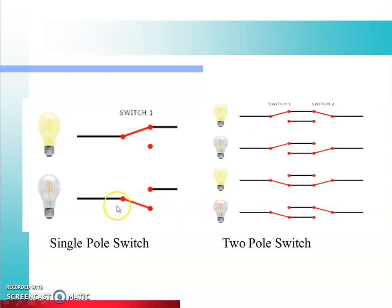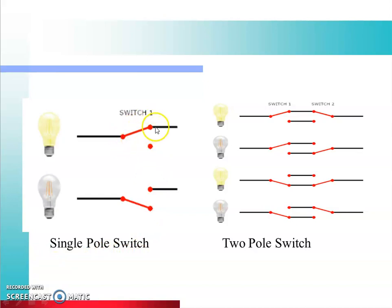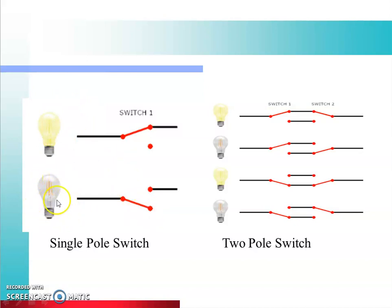Single pole switch ka operation dekhiye — agar hamne yeh position pe kiya, to yeh jo lamp hai woh glow karega. Agar hamne switch ka position change kiya, to yeh lamp glow nahi karega. Two-way switch mein do connections available hain, aur kisi bhi lamp ko glow karne ke liye ek close path chahiye current ka — close path hum karte hain switch ki madad se, jo circuit ko make ya break karta hai.